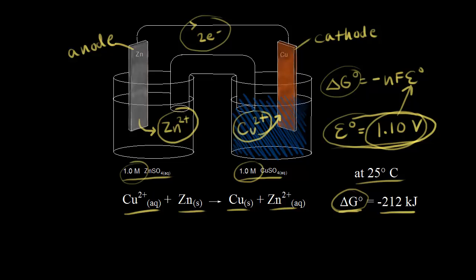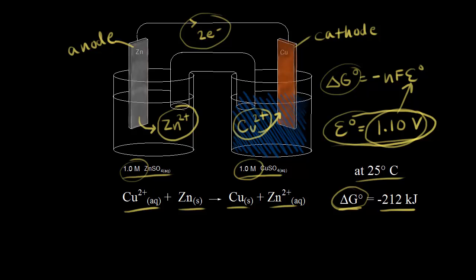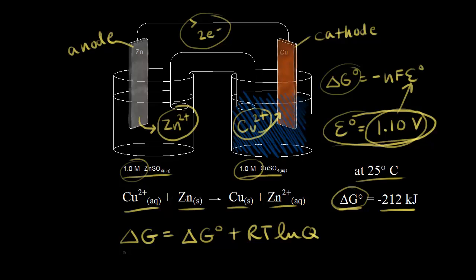Let's look at the equation for the change in free energy from thermodynamics and analyze our galvanic cell. The change in free energy is equal to the standard change in free energy, delta G zero, plus RT times the natural log of Q. Delta G is the instantaneous difference in free energy between your reactants and your products. Delta G zero is the change in free energy under standard conditions. R is the gas constant, T is temperature in Kelvin, and Q is your reaction quotient.